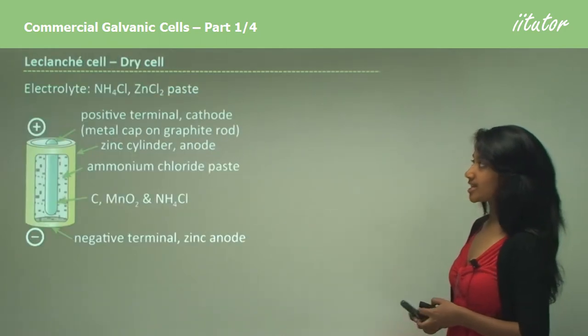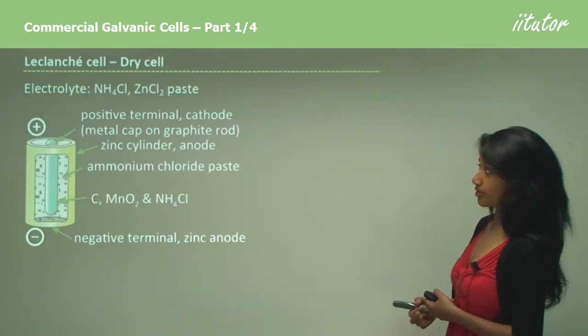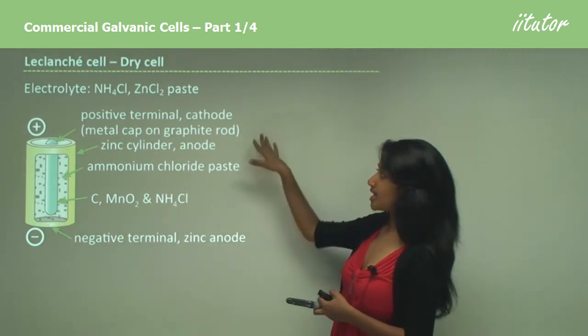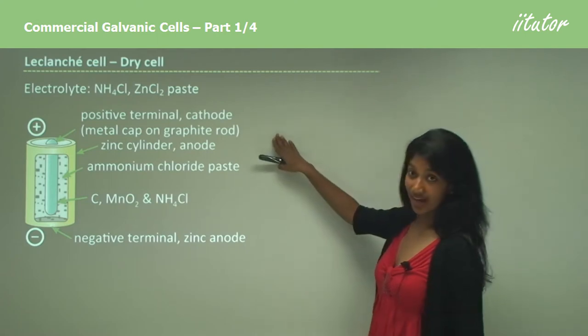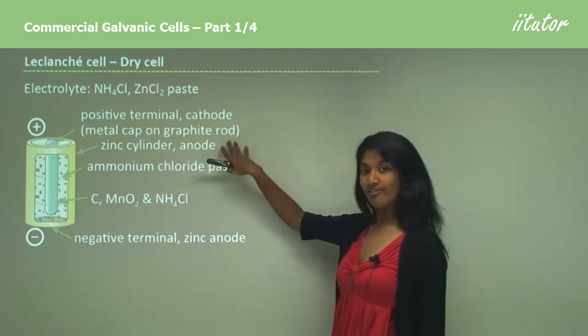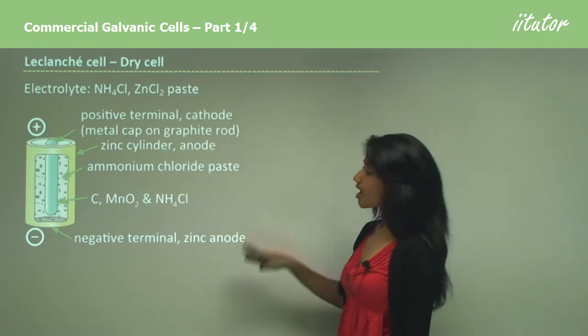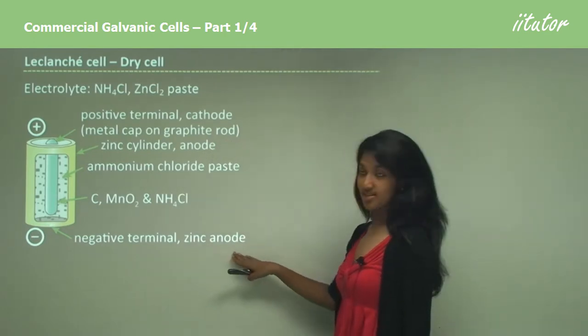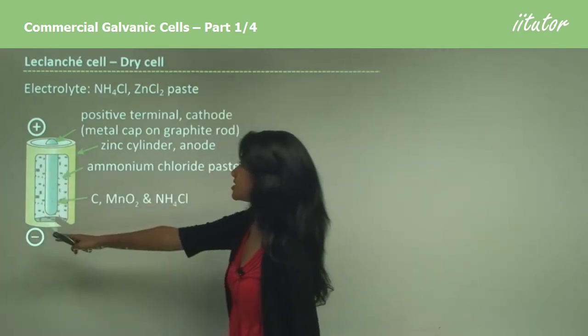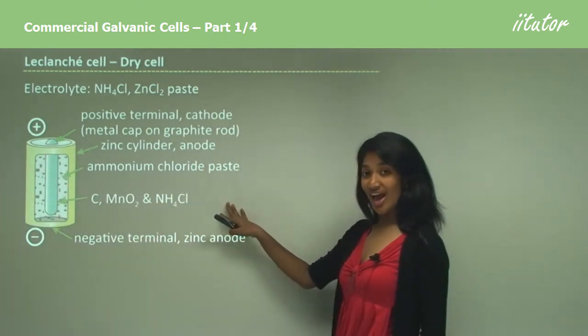So let's take the dry cell as one of our primary cells. There is a positive terminal and a negative terminal. In the positive terminal, that's where the cathode is. There is a metal cap on graphite rod. Graphite rod is just carbon rod. While in the negative terminal, there is a zinc anode. It also has a zinc casing, which is a zinc cylinder, and that also acts as an anode.